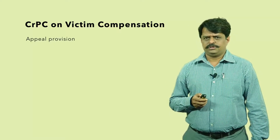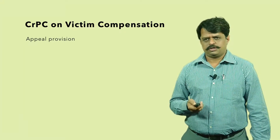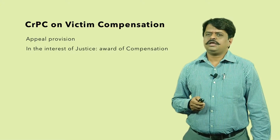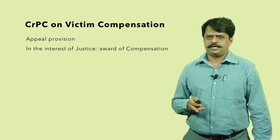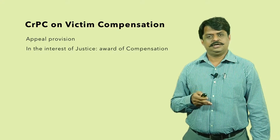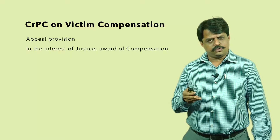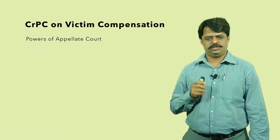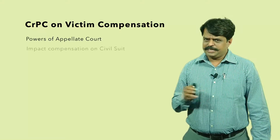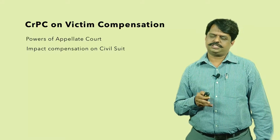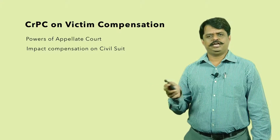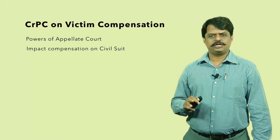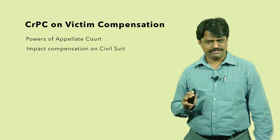Regarding appeal provisions: when we talk about punishment, the compensation allotted is appealable. In the interest of justice, the award of compensation should be made part of every criminal proceeding — that is what Section 357 is all about, and whatever order is passed by the court under Section 357 is appealable. The offender can question the compensation allotted. There is also a telling impact on civil proceedings, because whatever compensation is awarded under Section 357 would set off the claim in civil proceedings, taking care of the law relating to double jeopardy so that the offender is not punished twice under two different legislations.